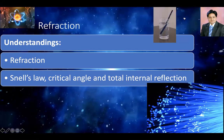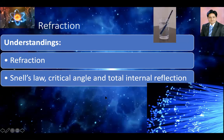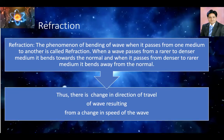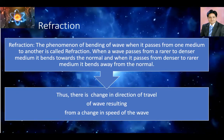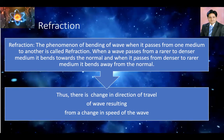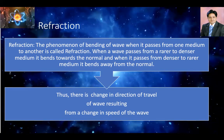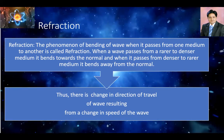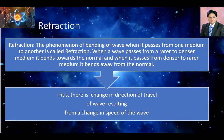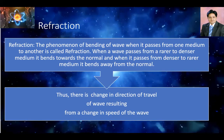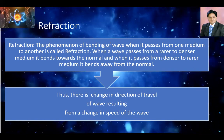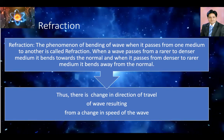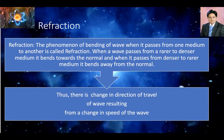So let's understand what is refraction. Refraction is actually the bending of light or bending of a wave when it passes from one medium to another. For example, if light passes from glass to air or air to glass, it actually bends when it hits the boundary at an angle other than 90 degrees. When it passes from a rarer to a denser medium, it bends towards the normal. And when it passes from denser to rarer medium, it bends away from the normal.